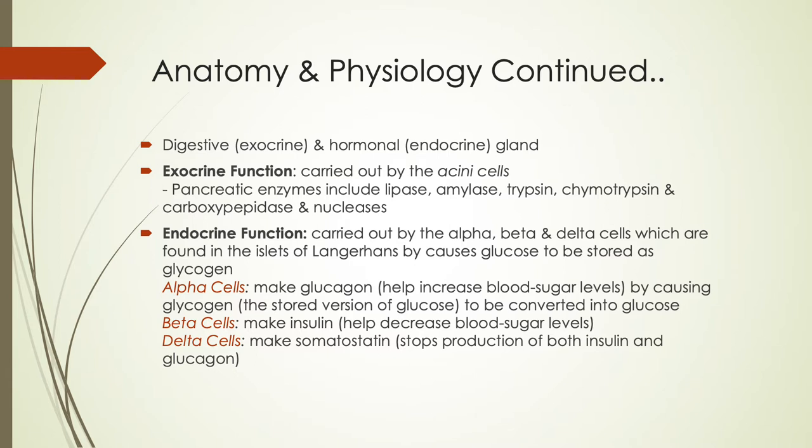The beta cells help create and release insulin, a hormone that helps lower blood sugar levels by having our cells uptake the extra glucose and store it in the form of glycogen. The delta cells help create homeostasis when blood sugar is at a good level and doesn't need to increase or decrease — it is somatostatin that gets released.